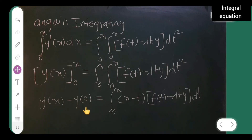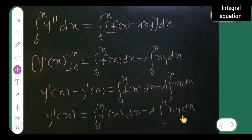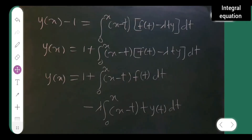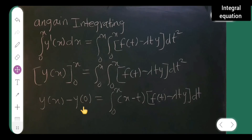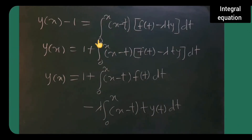Applying the boundary condition y of 0 equals 1: y of x minus 1 equals integral from 0 to x of (x minus t)(f of t minus lambda t y) dt. Bringing the 1 to the right side gives y of x equals 1 plus that integral.